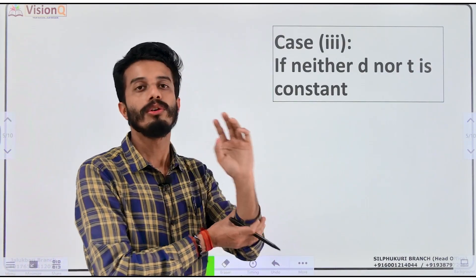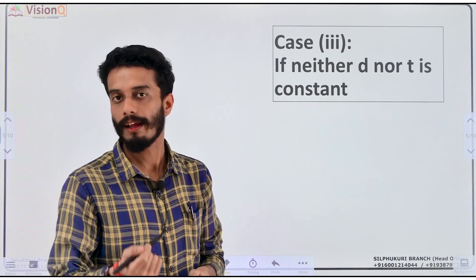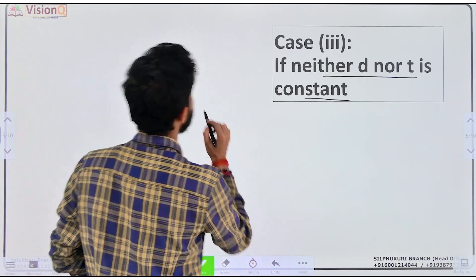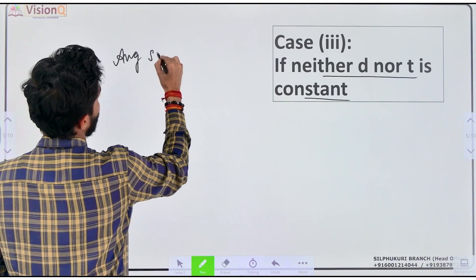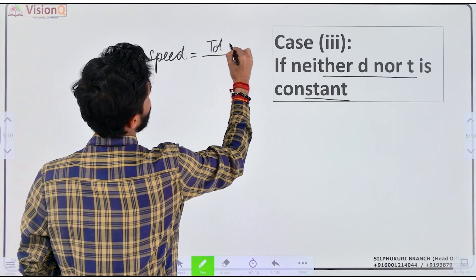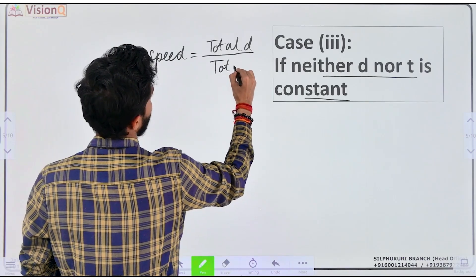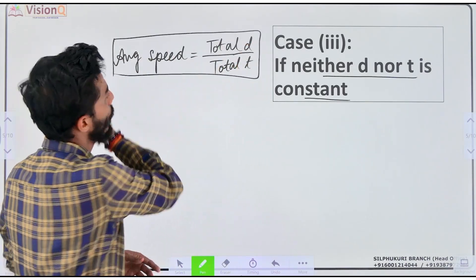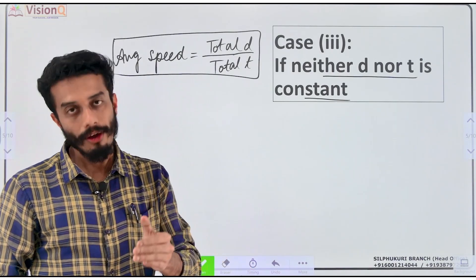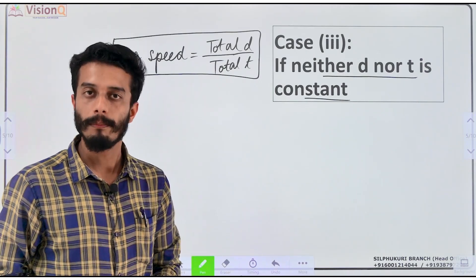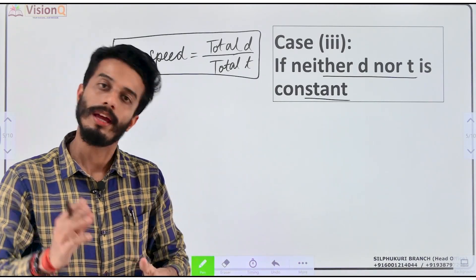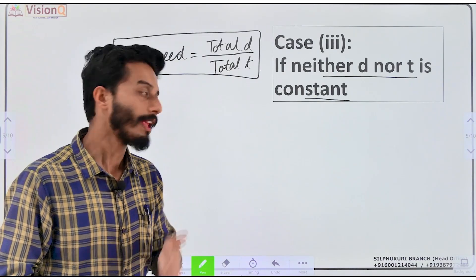The last concept: if neither distance nor time is constant, then we apply the main formula — total distance divided by total time. If speed is constant, the average speed equals that speed. This is the full concept.